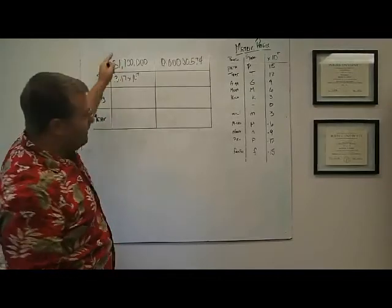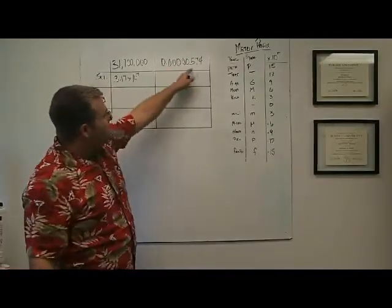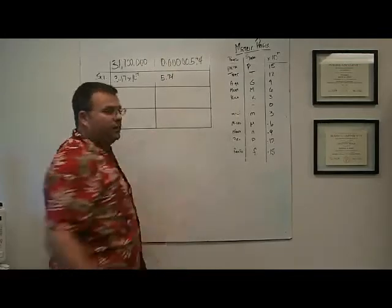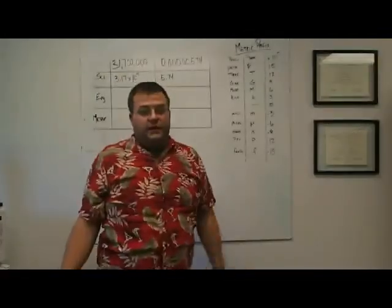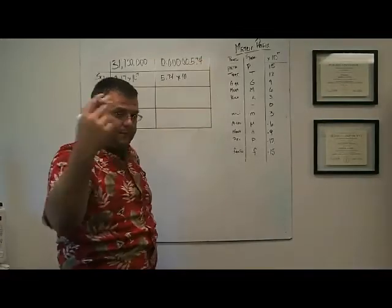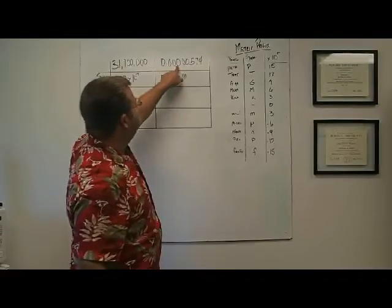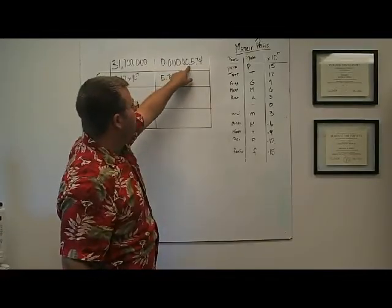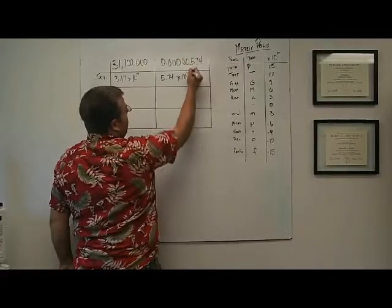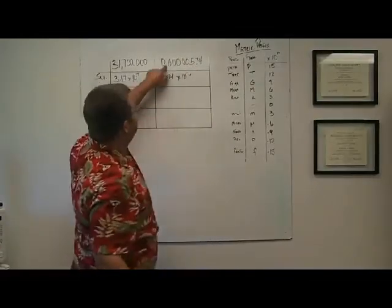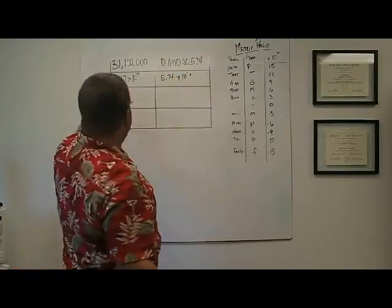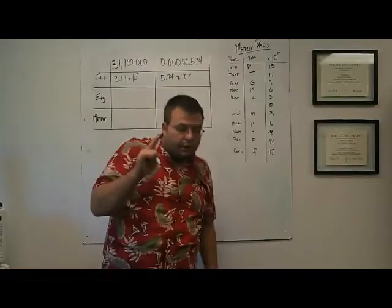That gives us 3.17 times 10 to the seventh power — that's scientific notation for thirty-one million seven hundred thousand. For the small number, we end up with 5.74 because we only get one digit to the left of the decimal. We move the decimal one, two, three, four, five, six times, and since we moved it to the right, it's times 10 to the negative sixth.